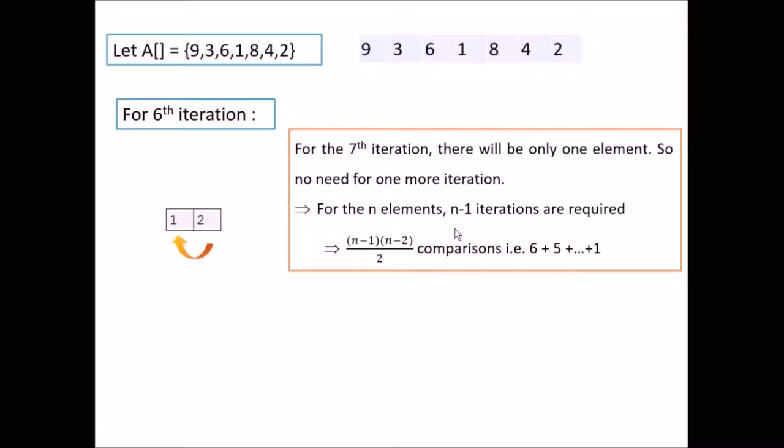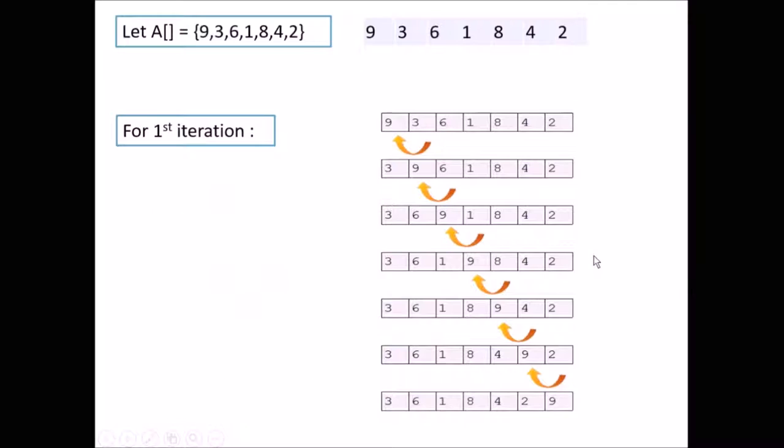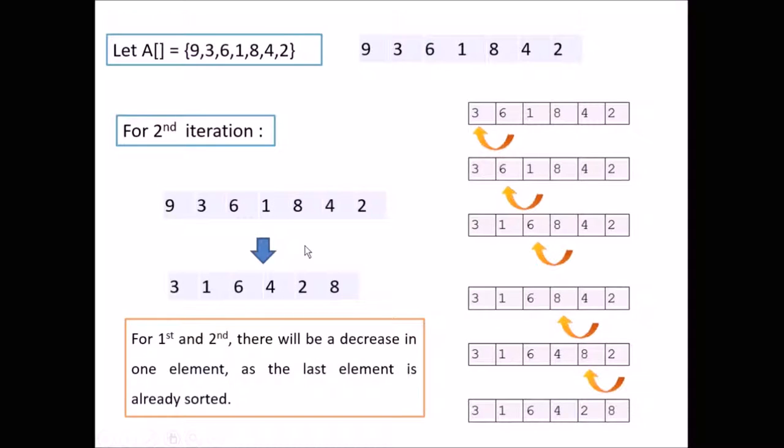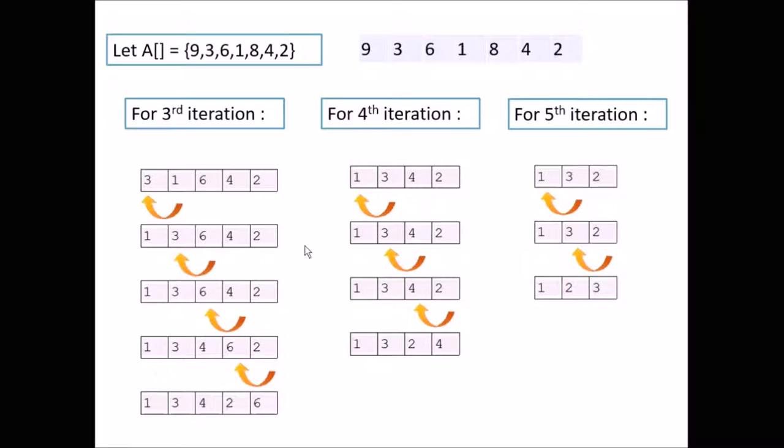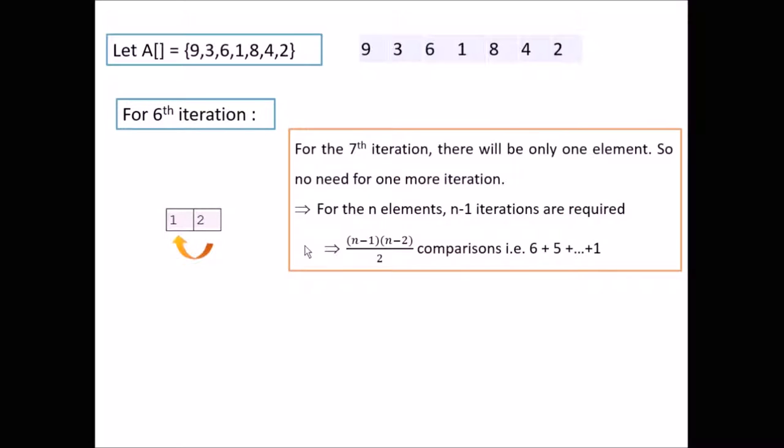If we look into the number of comparisons, here it is 6 plus 5 plus and so on 1. That is in the first iteration total number of comparisons are 6. That is if it contains n elements, then the total number of comparisons in the first iteration is n-1. In the second n-2, here it is 5. And for third it is n-3. And likewise it will continue until it is 1. So for general n elements number of comparisons are n-1 into n-2 divided by 2.